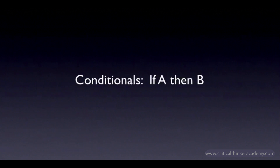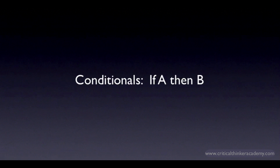Conditionals are claims of the form: if A is true, then B is true. We use and reason with conditionals all the time. There's a lot that can be said about conditionals. In this tutorial, we're just going to give the basic definition and the truth table for the conditional. Part 4 of this course will come back to conditionals and say a few more things about the different ways in which we can express conditional relationships in language.